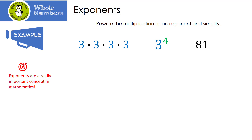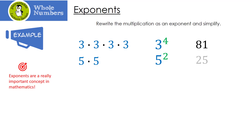Let's look at another one. Five times five — that's five to the second power, or five squared. Five is my base. That means I'm taking five and multiplying it twice. Five times five just happens to be 25.